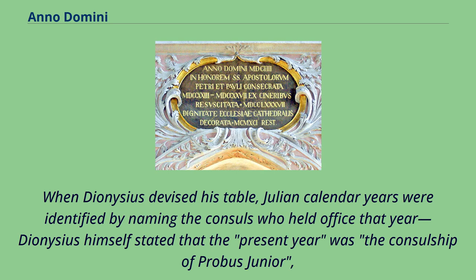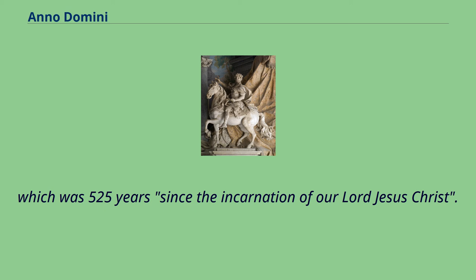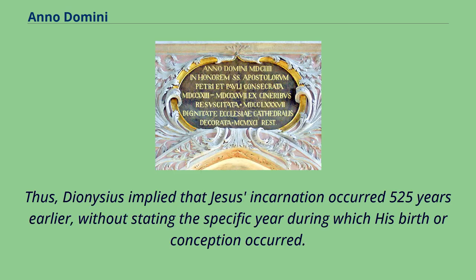When Dionysius devised his table, Julian calendar years were identified by naming the consuls who held office that year. Dionysius himself stated that the present year was the consulship of Probus Jr., which was 525 years since the incarnation of our Lord Jesus Christ. Thus, Dionysius implied that Jesus' incarnation occurred 525 years earlier, without stating the specific year during which his birth or conception occurred.